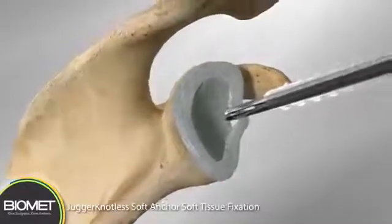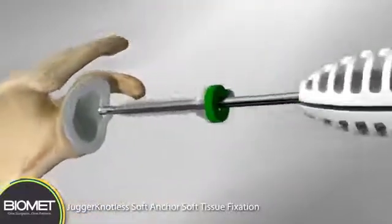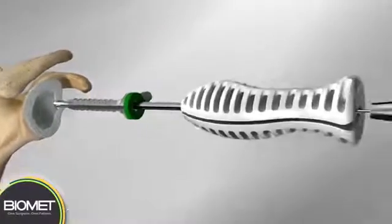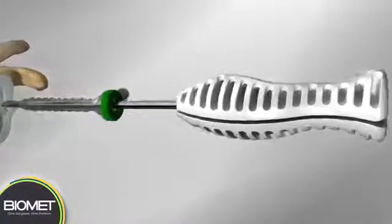Position the jugger knotless guide on the bone. Advance the drill until contact is made with the guide handle.